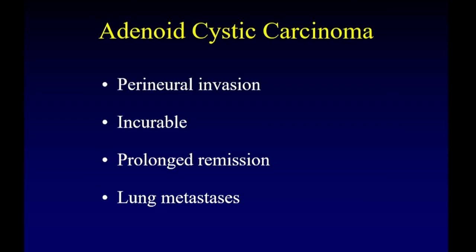Adenoid cystic carcinoma is famous for its strong propensity for perineural invasion. Lymphoma is the other disease that also tends toward perineural spread. Unfortunately, adenoid cystic carcinoma is essentially incurable; however, these tumors can undergo very prolonged remission, and patients who achieve local-regional control may go 10 to 20 years without evidence of recurrent disease. When disease does recur, it tends to be as distant lung metastases.